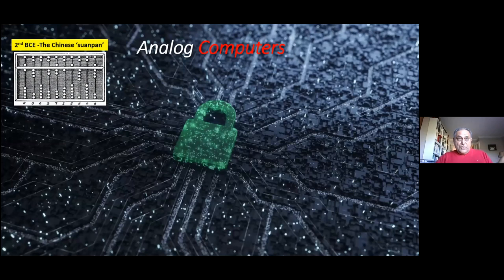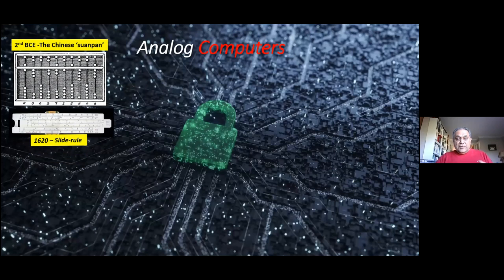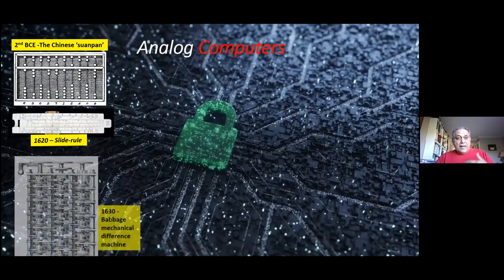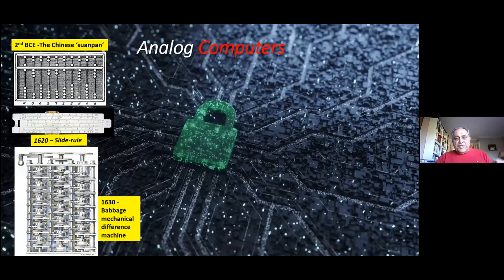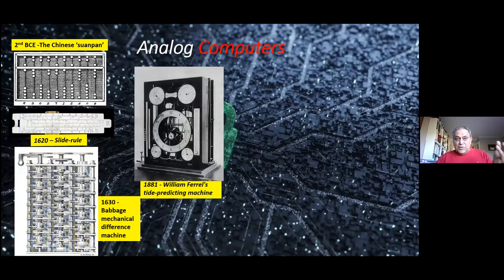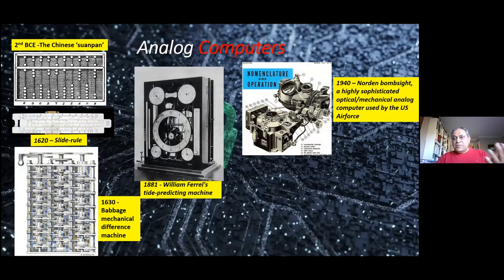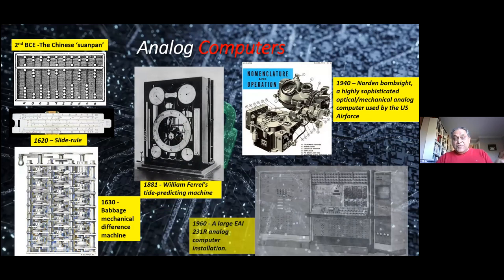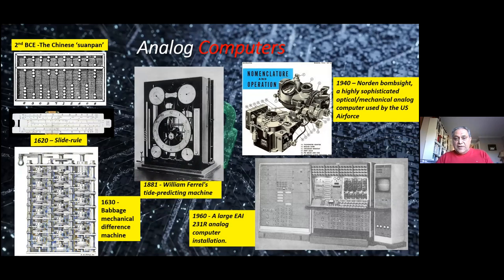2,000 years ago, the Chinese abacus, still being used by some. A slide rule that I use as recently as 1980s, invented, I didn't know that, in 1620. And this is all, quote, analog computers. An amazing machine, created by a guy by the name of Babbage. Mechanical difference machines, all with gears and so on. It was able to calculate logarithms. William Farrell created an electromechanical tide predicting machine. And of course, the bomb was, the war was won with a bomb site that was created with a very sophisticated analog computer with mechanical and optical devices on airplanes. And as recently as 1960, we had these gigantic analog computers installed by a company called EAI.